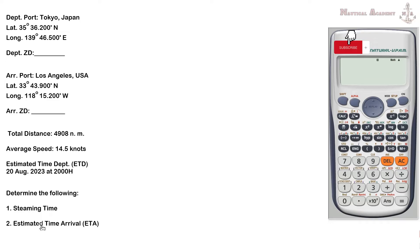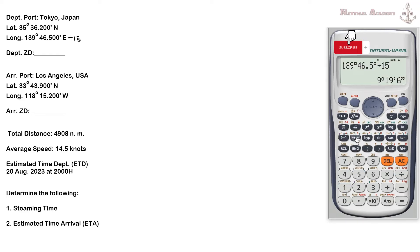We need to determine the steaming time and the estimated time of arrival. Since our departure and arrival ports have different time zones, we need to apply a zone description to find the local time of arrival. To find the zone description, we divide the longitude by 15. For Tokyo, 139°46.5' divided by 15 equals 9.31, which rounds to 9. Since Tokyo is in easterly longitude, the zone description sign is negative, so ZD = -9.